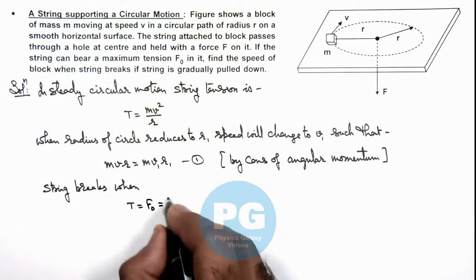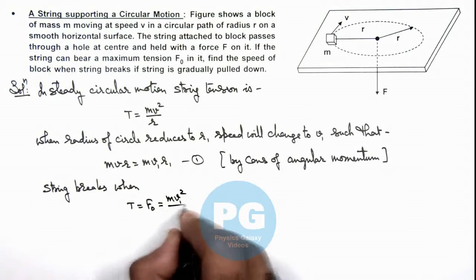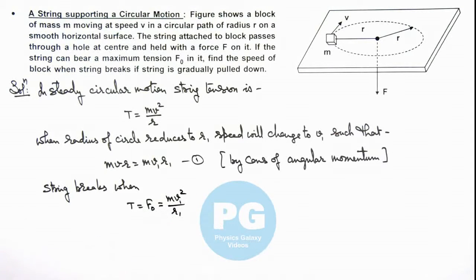And it happens when m v1 squared by r1 is equal to F_not.